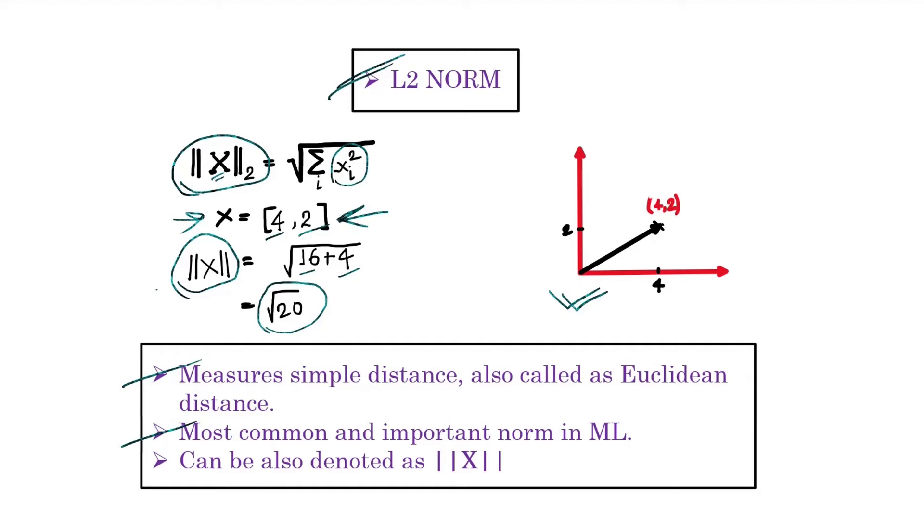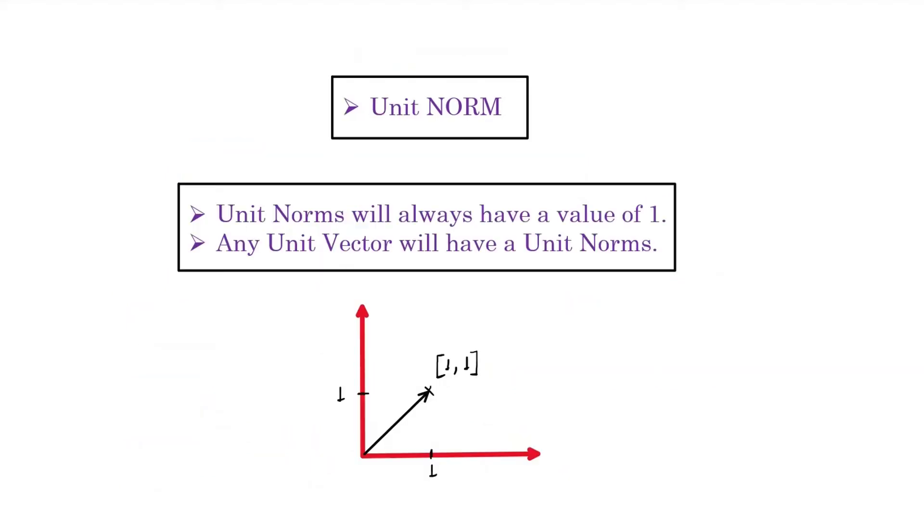It is the most common and important norm in the field of machine learning or data science. If you appear for an interview and are asked a question on norms, most probably it will be on L2 norm. As we have seen, L2 norms can also be represented without mentioning the 2 at the bottom.